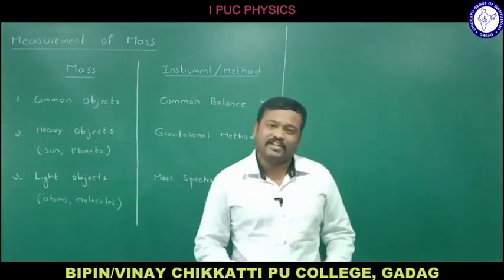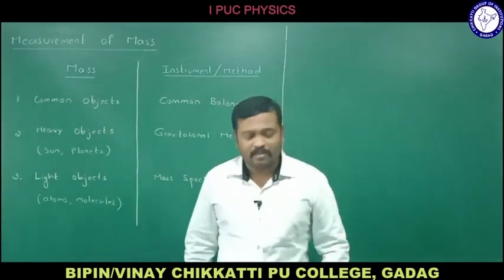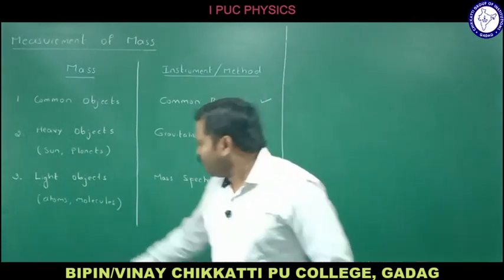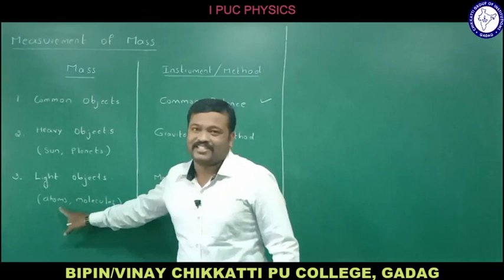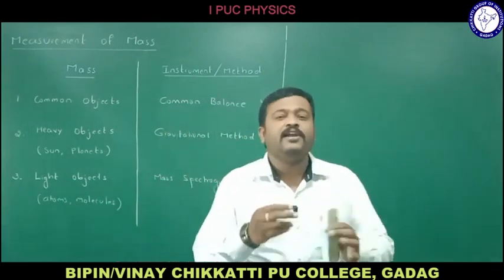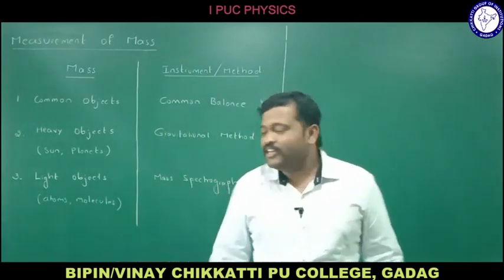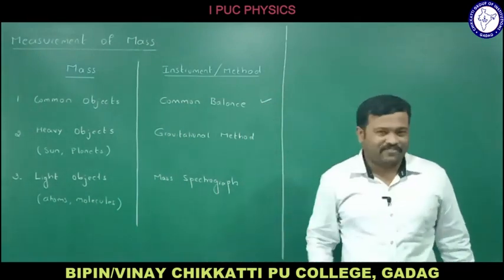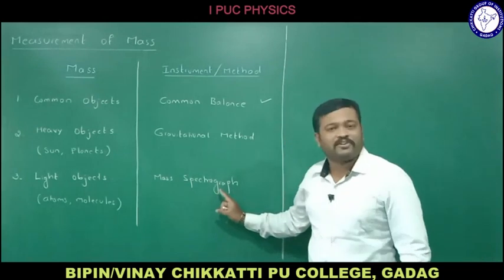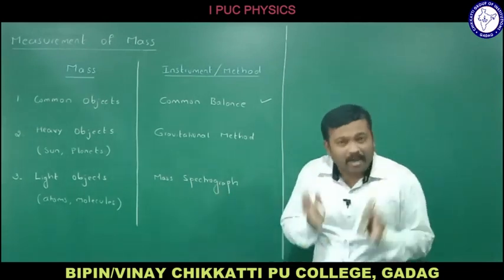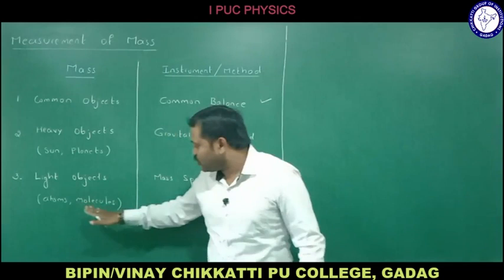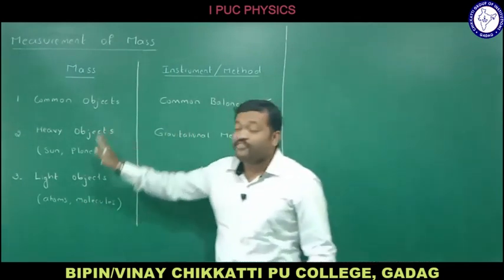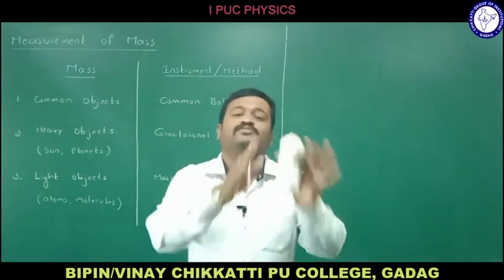Similarly, if I want to measure very light objects like atoms and molecules, we need a device called a mass spectrograph. By using a mass spectrograph, we can measure the masses of lighter objects like atoms and molecules. So these are the instruments used to measure different kinds of masses.